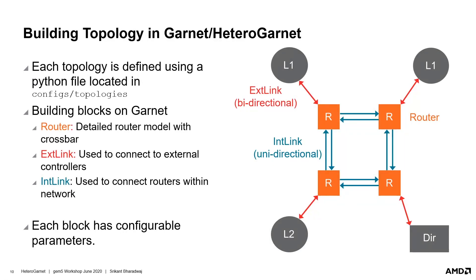Garnet provides several building blocks to create flexible topologies. The topology files reside in configs/topologies, where any new topology file can be added and used. The key building blocks are the routers, external links, and internal links. Routers include the switching mechanism, the crossbar unit, as well as the required output and input buffers. External links connect external objects such as cache controllers, while internal links are used to connect routers within the network. Each block has configurable parameters such as link latency or router latency, and in Heterogarnet, clock domains and widths as well.